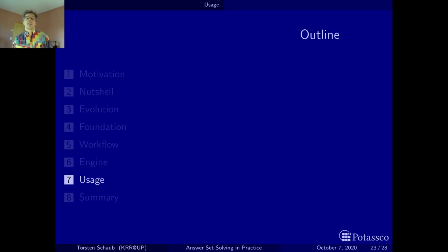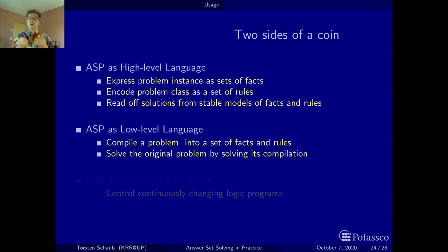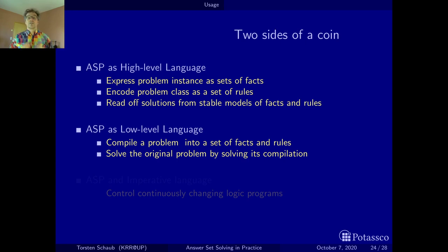In chapter 7, let us look at how ASP is used. In principle there are two alternatives. You can use it as a high-level language, where you express the problem instance as a set of facts and you encode the problem class as a set of rules. The encoding of the problem class works for all problem instances of the class — this is called a uniform encoding. When you put both the encoding and the set of facts into the ASP system, you can read off the solutions from the stable models.